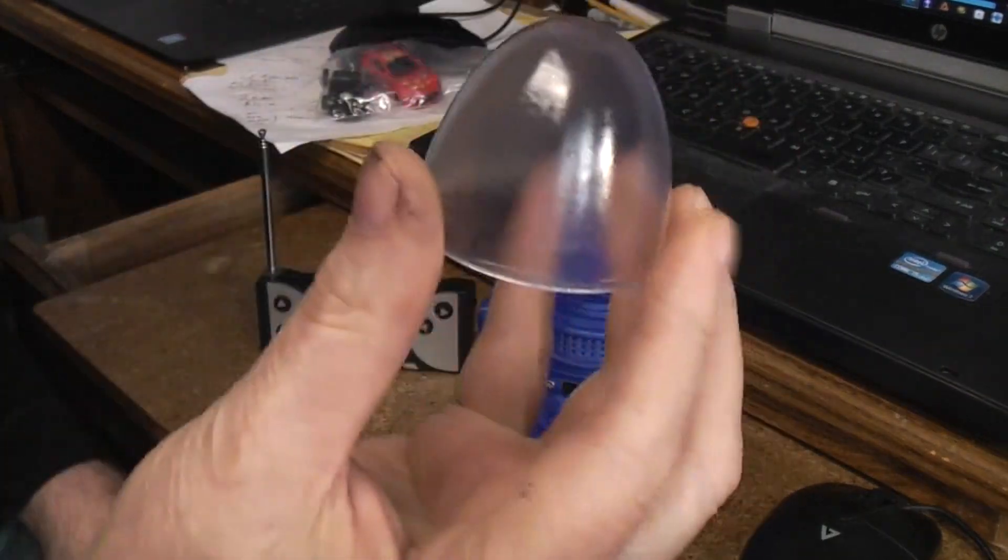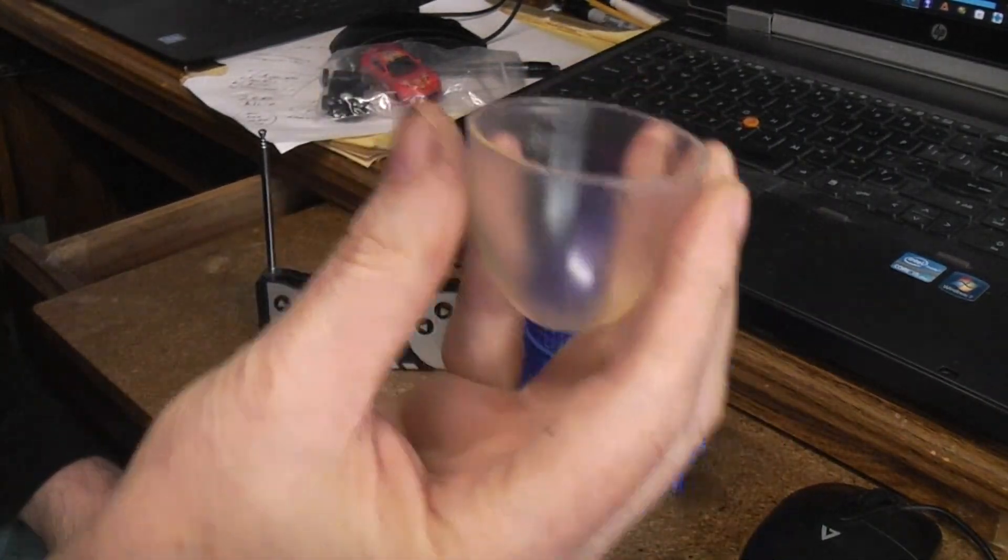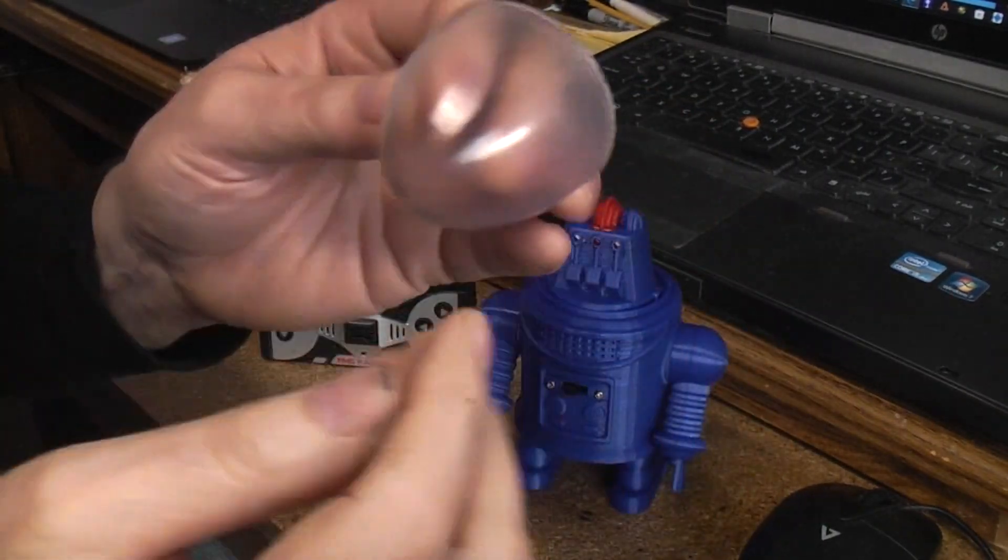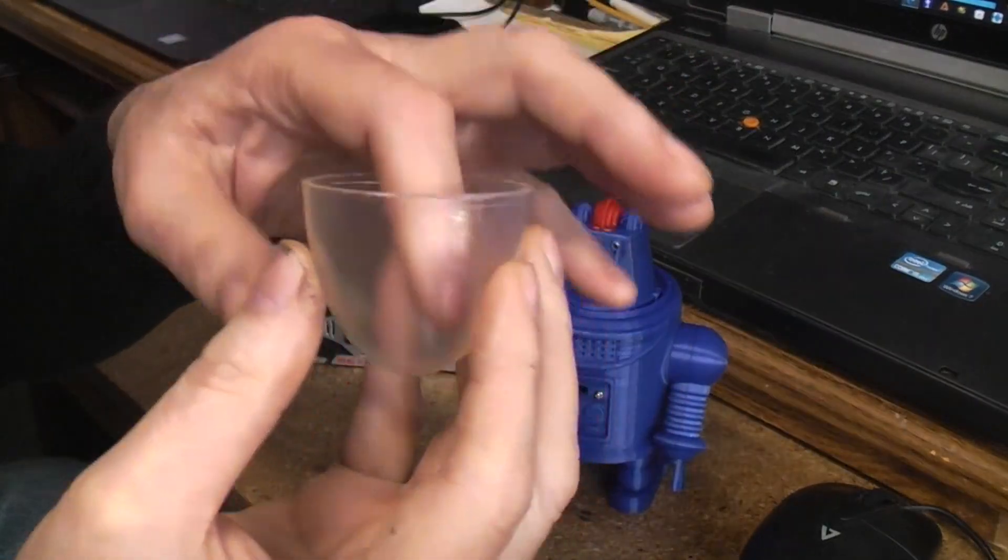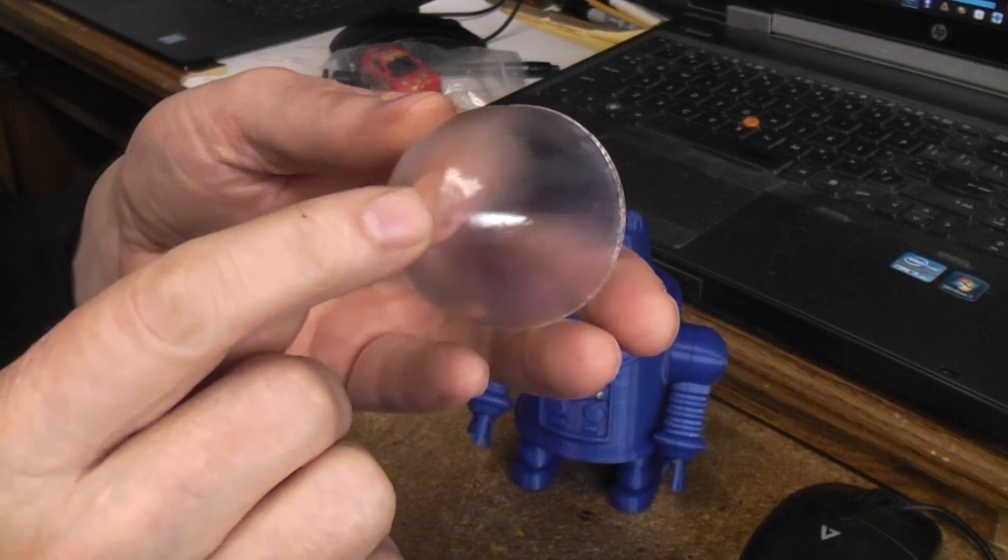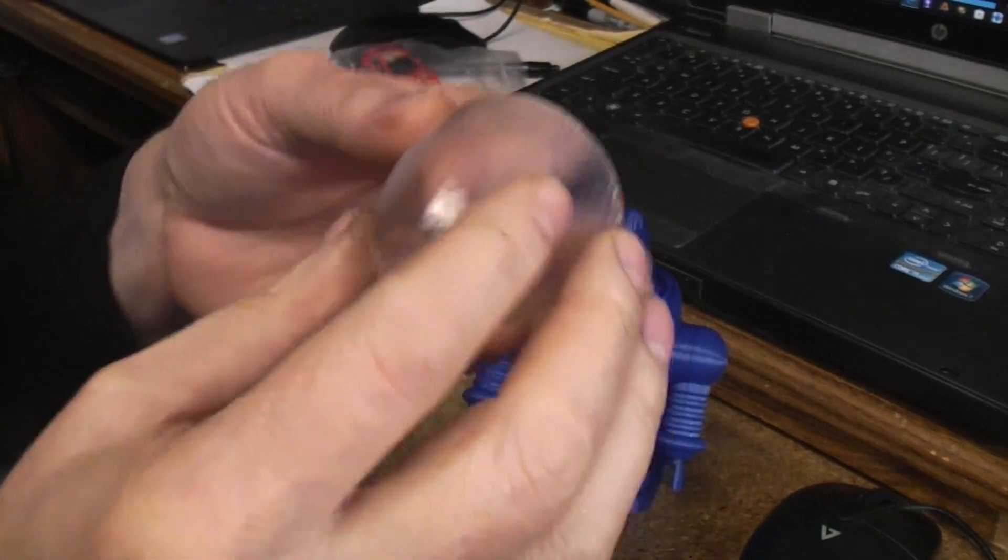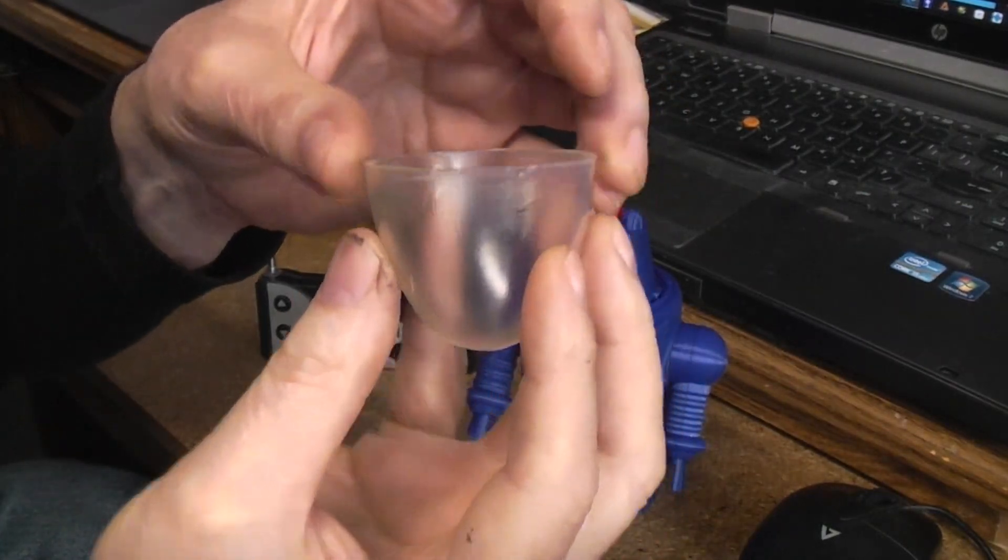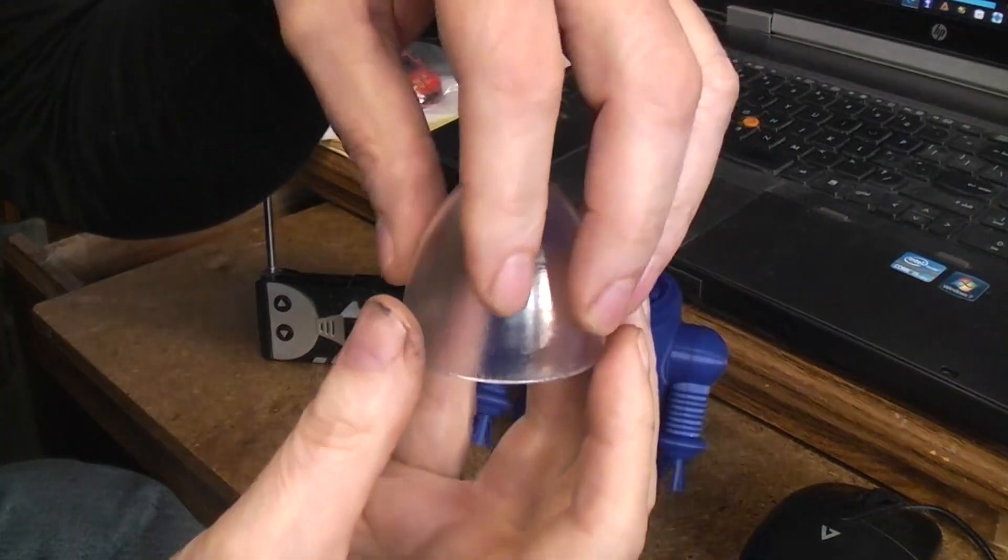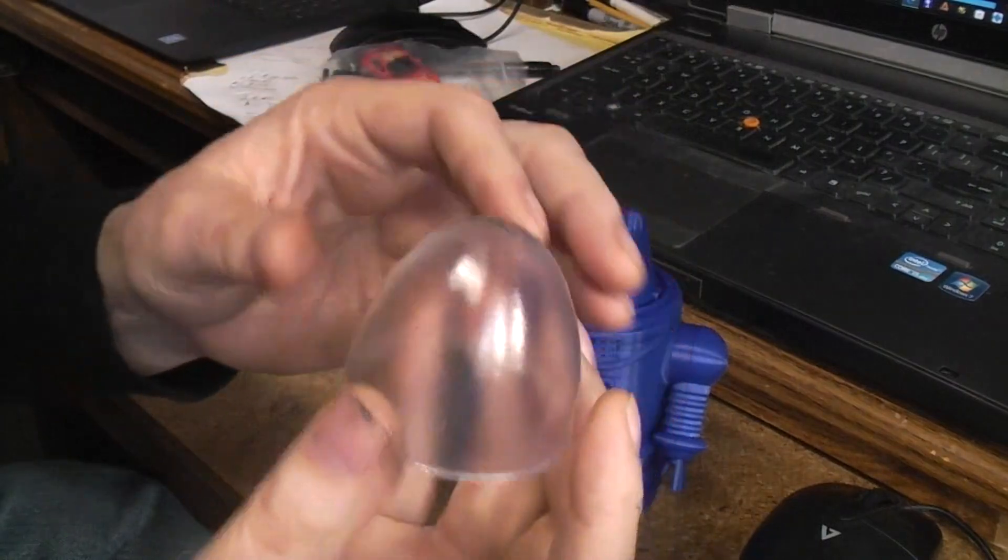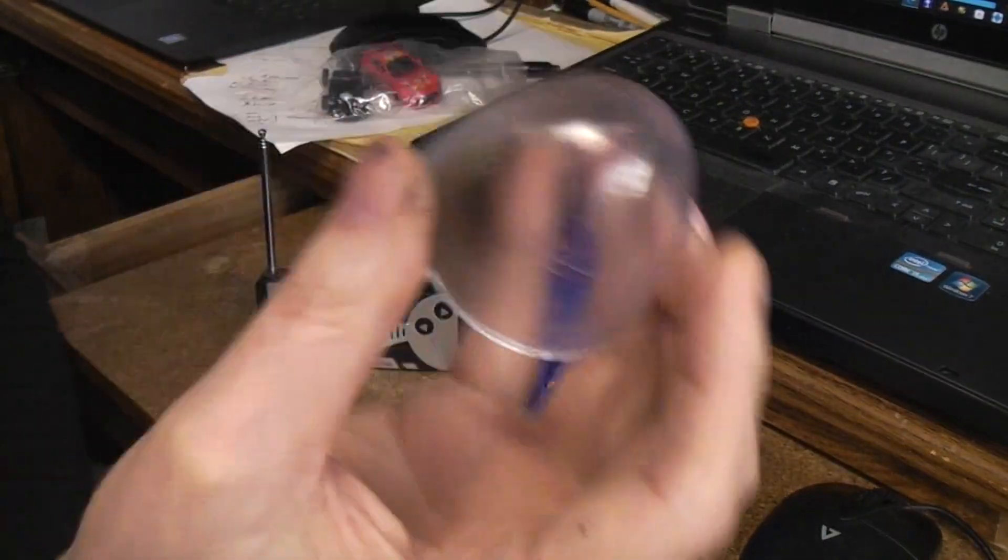At any rate, the point is it worked. And if it was any other part other than a clear dome, you could put holes in to let the resin run out so that it wouldn't collect and make that one defect, or you could print it with supports. But being a dome you don't want any of that stuff on there.